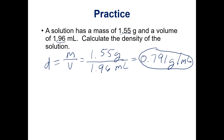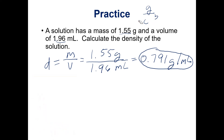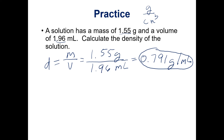Density will typically be in units of grams per milliliter. Sometimes you will also see grams per cubic centimeter, and a cubic centimeter is really the same thing as a milliliter — it's just a different way of expressing that volume. So if you have a density given in cubic centimeters you can also write that as grams per milliliter. Occasionally you will see other units but these are the most common.